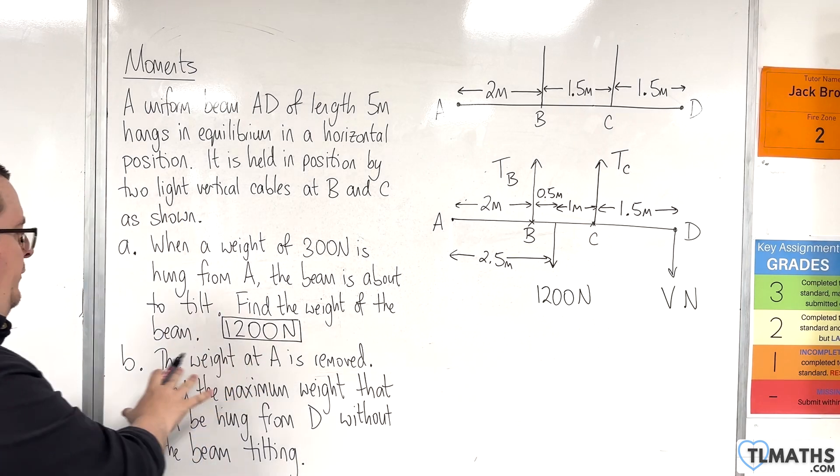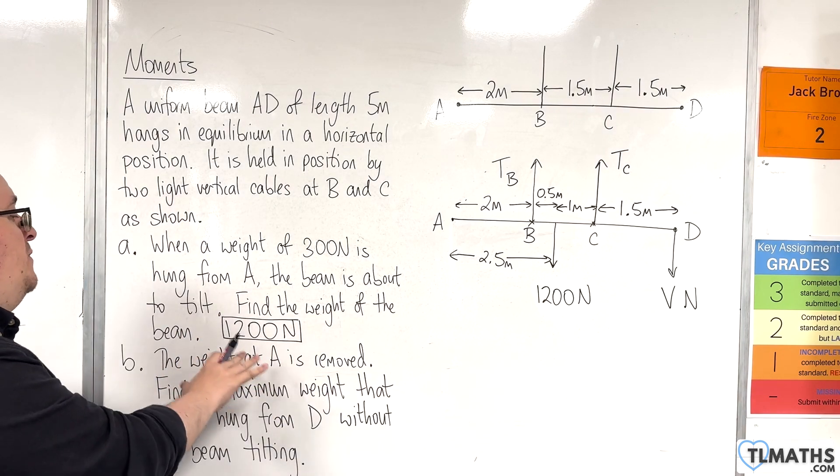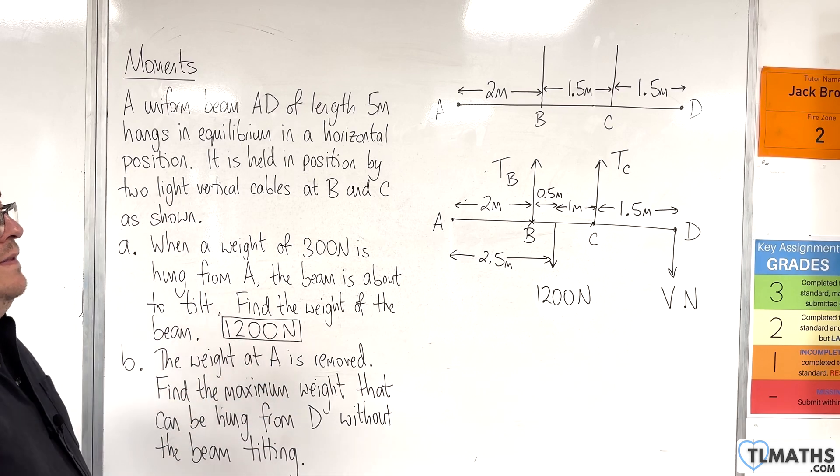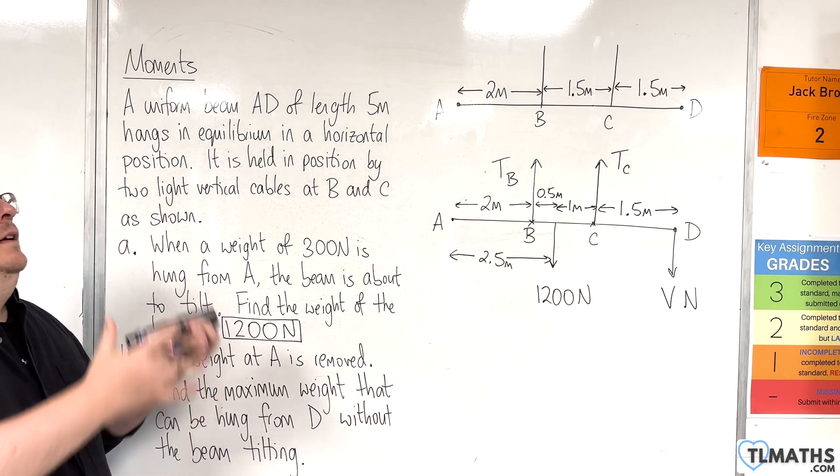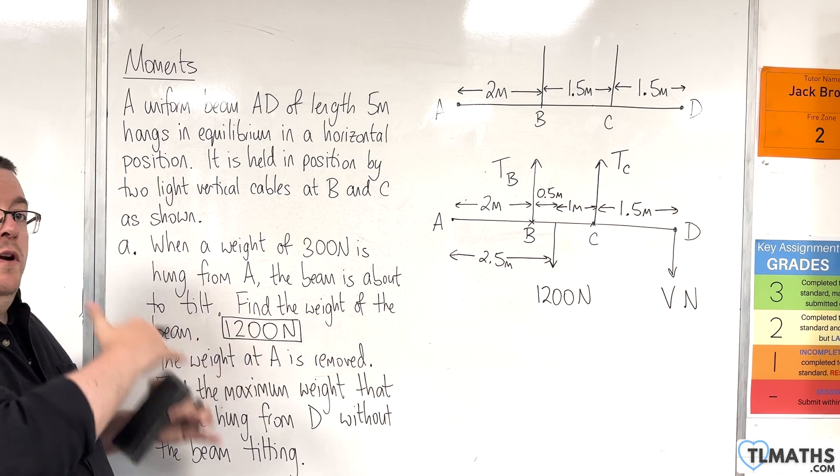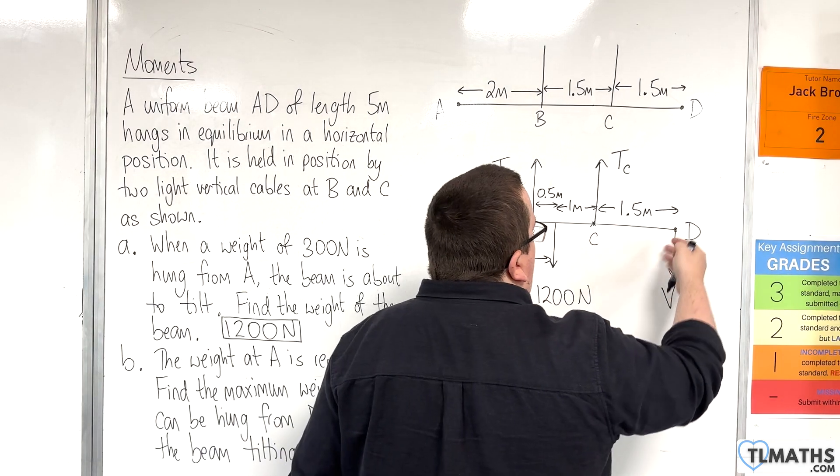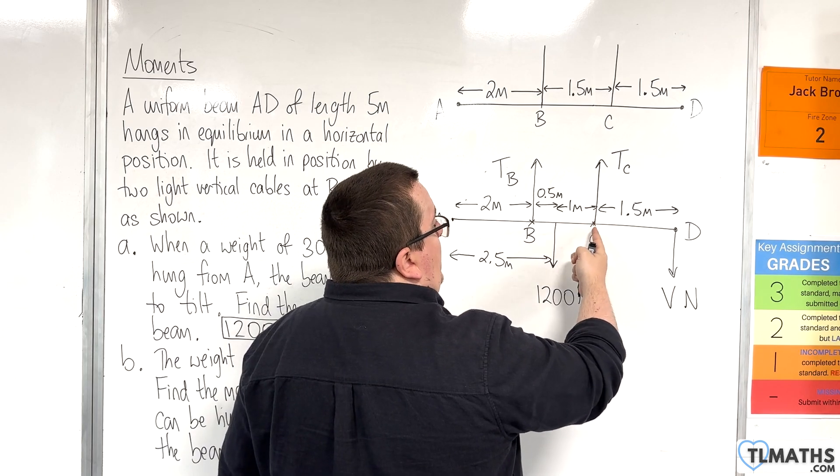Now, because the question is saying the weight at A is removed, find the maximum weight that could be hung from D without the beam tilting. That means we need to consider, at the most extreme point, that the beam is on the point of tilting. And if the weight is being added here, it's going to tilt about C now.